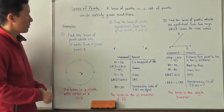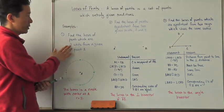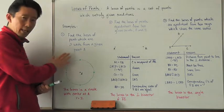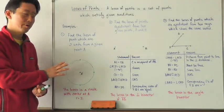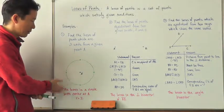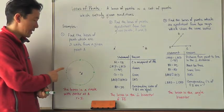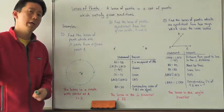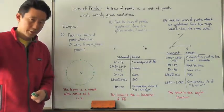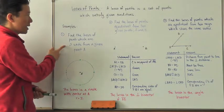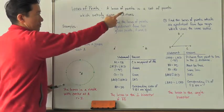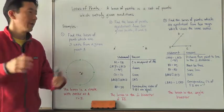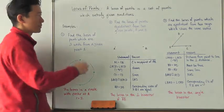So therefore, if I talk about the locus of points which are two units from a given point A, what I'm really referring to is a circle. It is a circle with center A and a radius of two. If I go ahead and draw that circle, it describes the set of points which satisfy this condition.